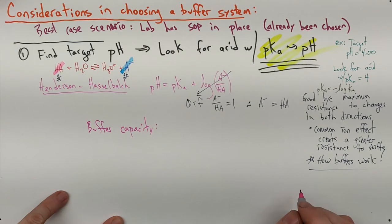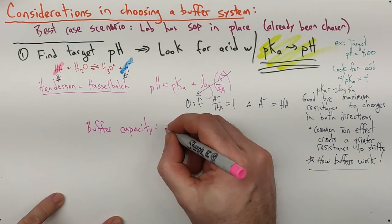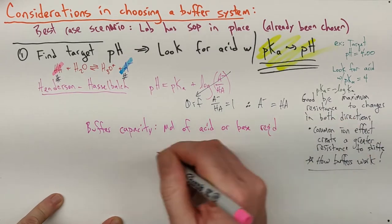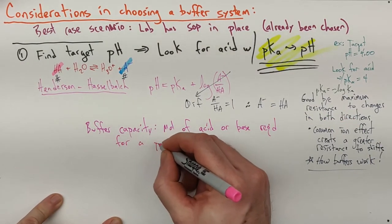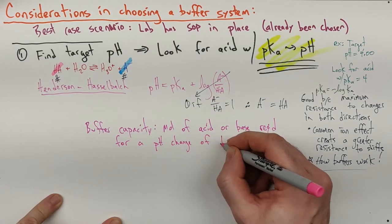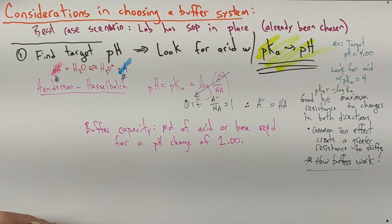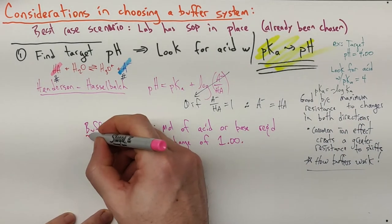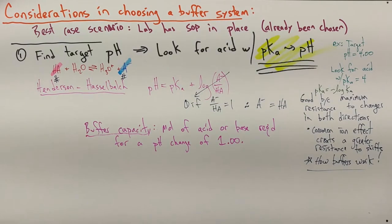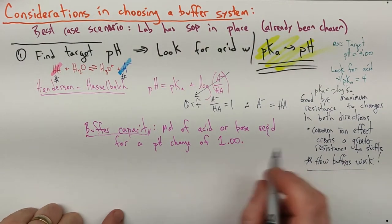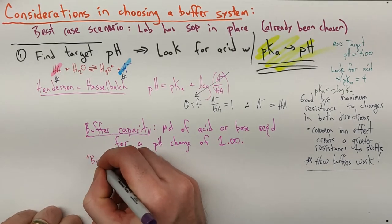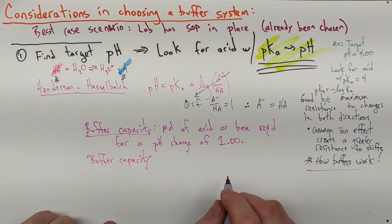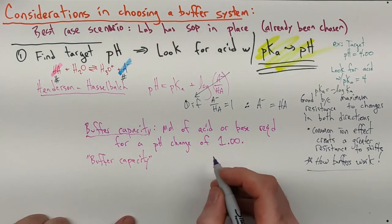We've already talked about the advantages of A- equaling HA. But the farther your pKa is from your target pH, the more skewed this is going to be. And what that really affects is your buffer capacity. The textbook definition is something along the lines of the moles of acid or base required for a pH change of 1. It's kind of hard for me conceptually to wrap my mind around that. That's the definition, I can't argue with the fact that that's the definition.